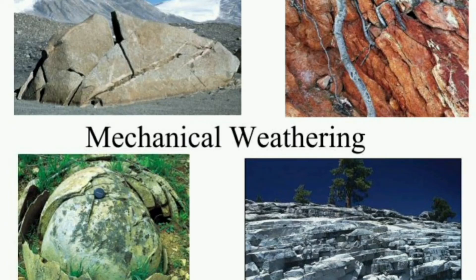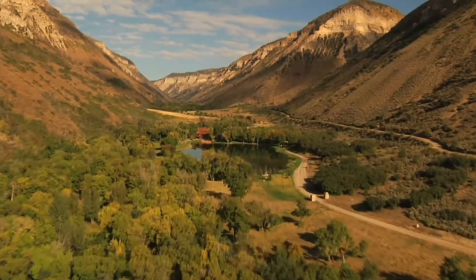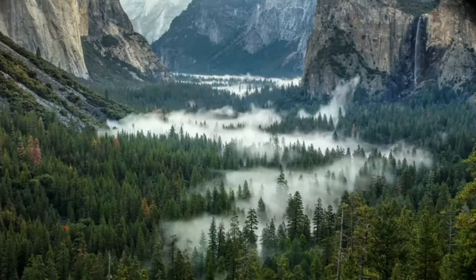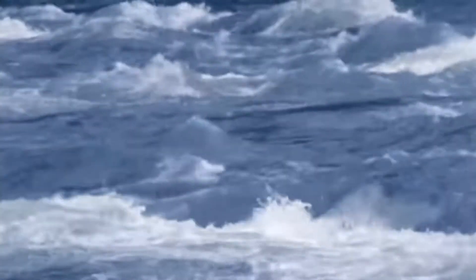In chemical weathering, water reacts with the chemicals of the rocks and further weakens the rock. Finally, weathering is a process by which rocks are weakened and broken. Weathering breaks down the rock, and then erosion moves the rock pieces away. The cutting away or wearing away of the earth's surface by moving agents is called erosion.